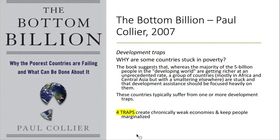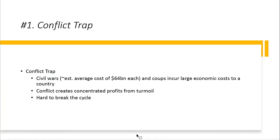Paul Collier's book 'The Bottom Billion' asks why some countries are stuck in poverty — and in most cases it's Africa. There are four reasons. The first is the conflict trap: you're stuck in constant civil war or government coups, so governments are unstable and it's hard to keep a macro economy going. You're fighting over the pie rather than trying to grow the pie, wasting resources on directly unproductive activities, and it's hard to break the cycle of an eye for an eye.